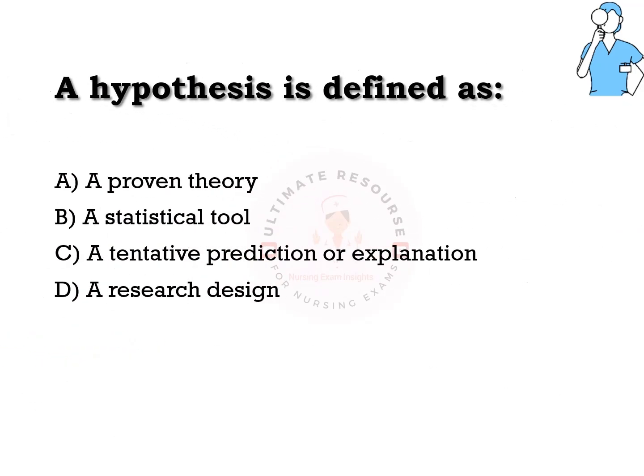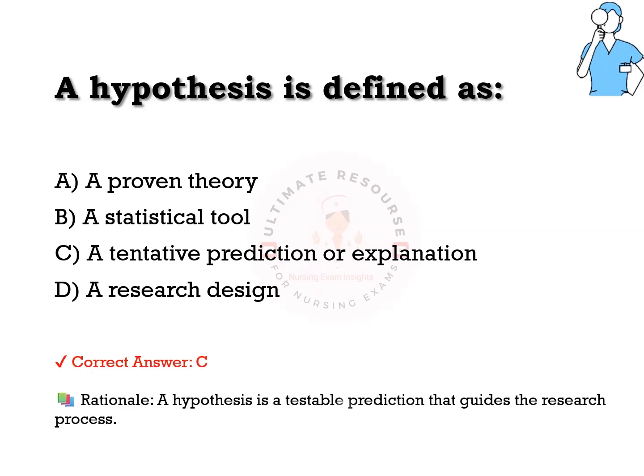A hypothesis is defined as: options are a) proven theory, b) a statistical tool, c) a tentative prediction or explanation, d) a research design. The answer is c) a tentative prediction or explanation. A hypothesis is a testable prediction that guides the research process.